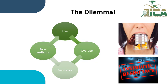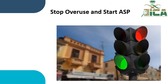Our dilemma is in this cycle. The use and overuse of any new antibiotics will lead to resistance, and the resistance will push scientists to produce another new antibiotic that will enter the same cycle. So we are struggling in this cycle. To break this cycle, we have to stop the overuse of antibiotics and start the Antimicrobial Stewardship Program.